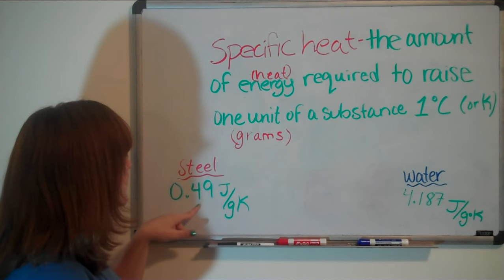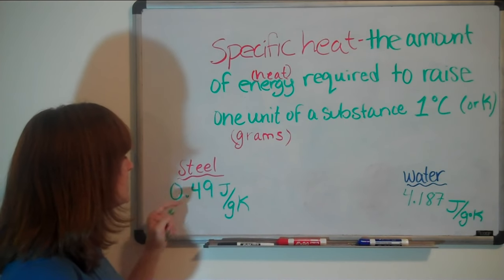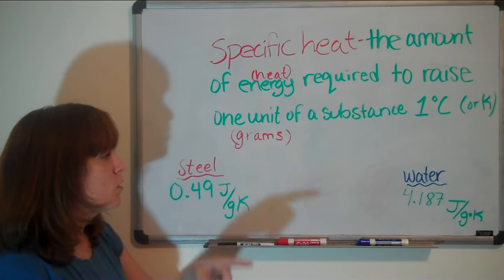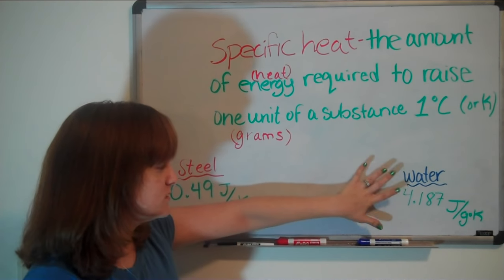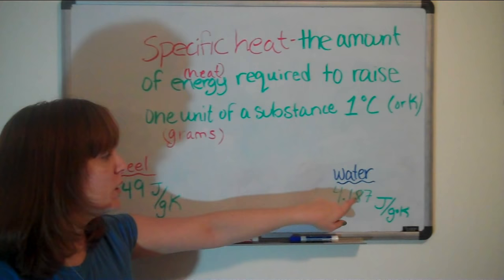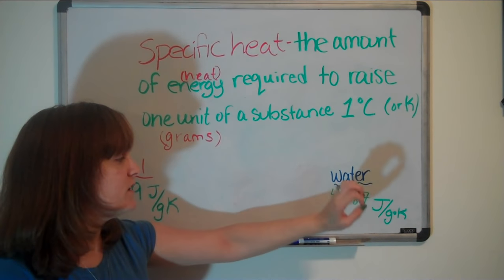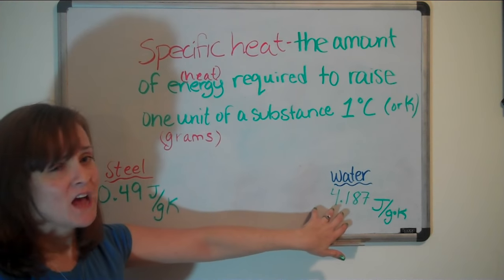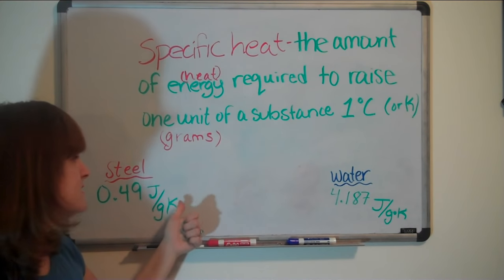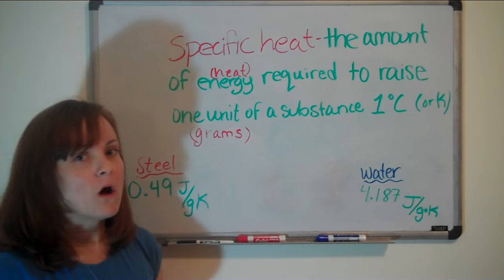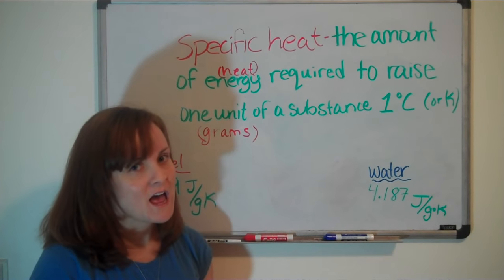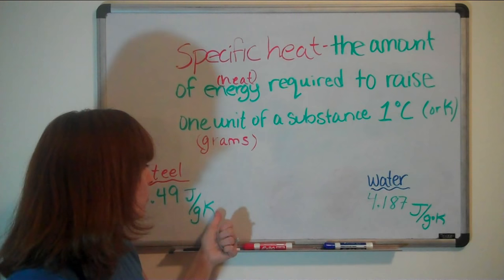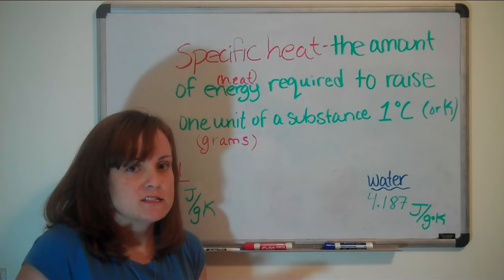The specific heat of steel is 0.49. The specific heat of water is 4.187 joules per gram Kelvin. That's 8.5 times higher than steel. So, that means water can absorb 8.5 times more heat than steel and not change its temperature.